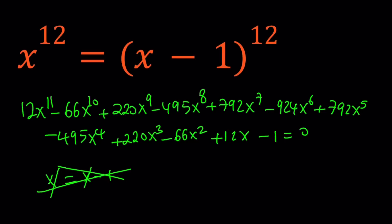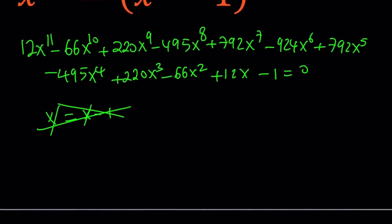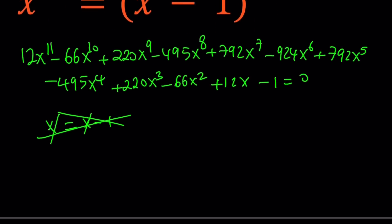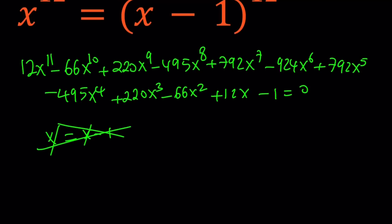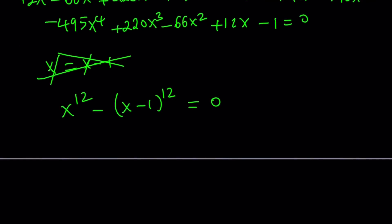If you look at it from taking the 12th root perspective, you also have to consider the absolute value — there's a negative side to it. One of the things we can do is write this as a difference of two squares. Putting x minus 1 to the 12th on the left-hand side and setting it equal to 0, this can be written as x to the 6th squared minus (x minus 1) to the 6th squared equals 0.